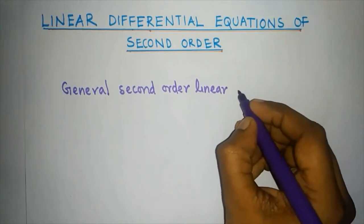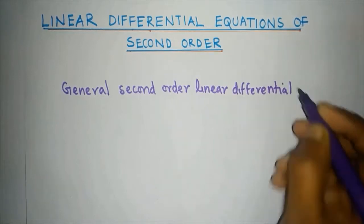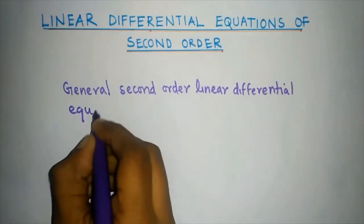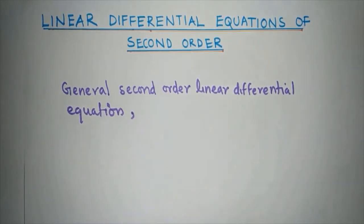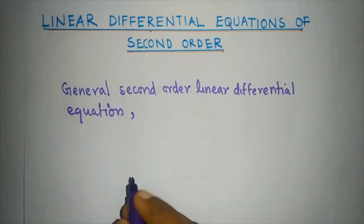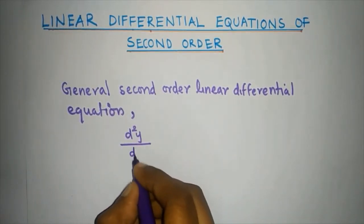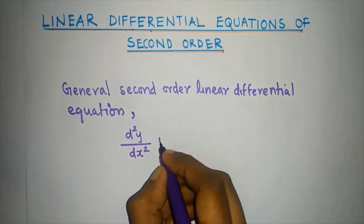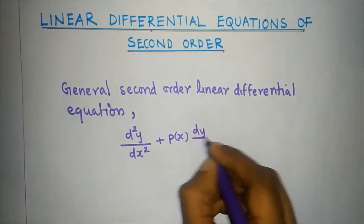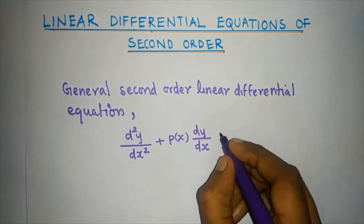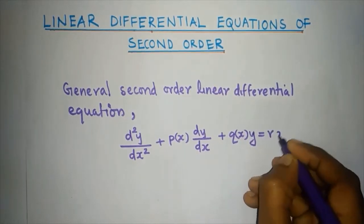Let's talk about linear differential equations of second order and the general form. The general form is: d²y/dx² plus P(x) · dy/dx plus Q(x) · y equals R(x).